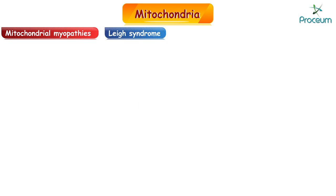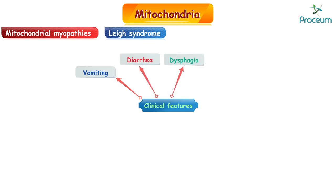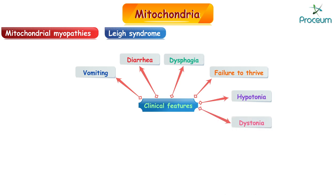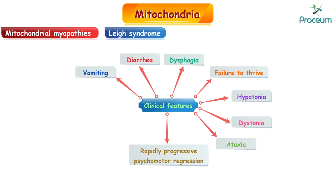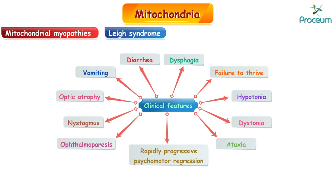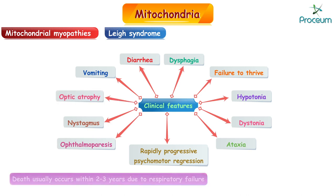There is also Leigh syndrome. Clinical features include vomiting, diarrhea, dysphagia, failure to thrive, hypotonia, dystonia, ataxia, rapidly progressive psychomotor regression, ophthalmoparesis, nystagmus, and optic atrophy. Death usually occurs within 2 to 3 years due to respiratory failure.